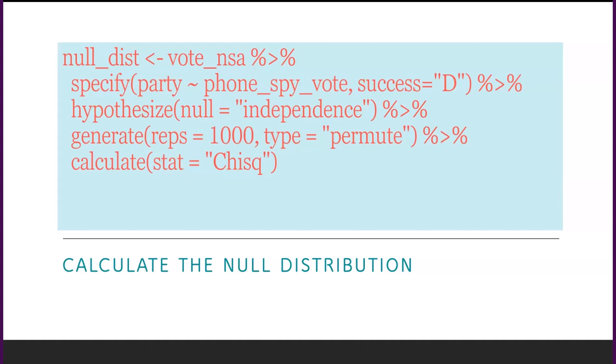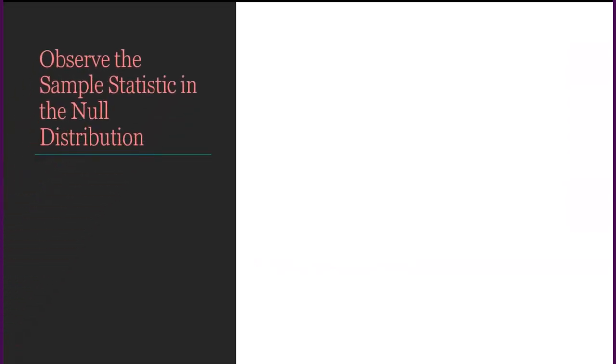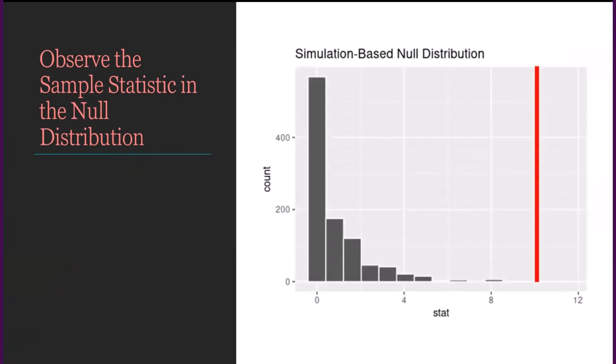The next step in the Downey and Forta process is to calculate the null distribution. Here you can see I use the same factors: the VoteNSA dataset, the party, and the phone-spy vote results. Now we can observe the sample statistic in the null distribution. As you can see, the sample statistic is far outside the null distribution.